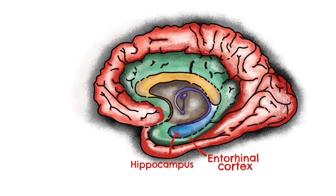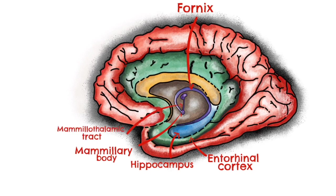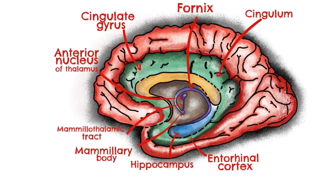From the hippocampus, fibres travel through the C-shaped fornix and connect to the mammillary body. From there, fibres travel in the mammillothalamic tract between the mammillary body and the thalamus, specifically the anterior nucleus of the thalamus. After this, fibres project to the cingulate gyrus and the cingulum, which you can see here coloured in green.